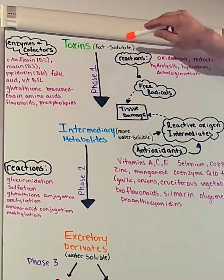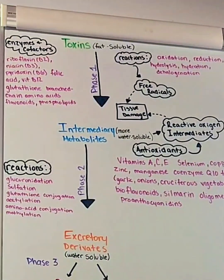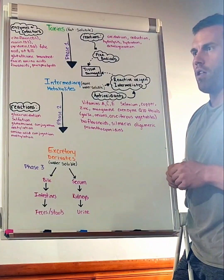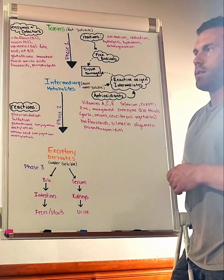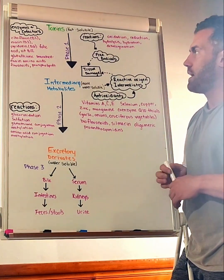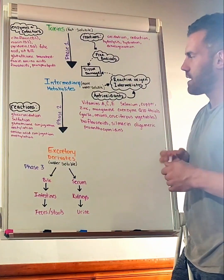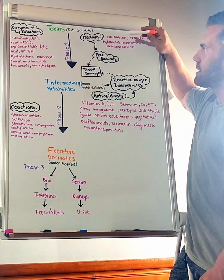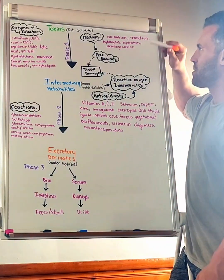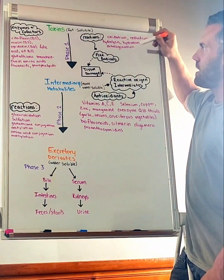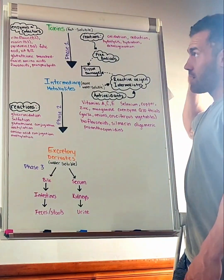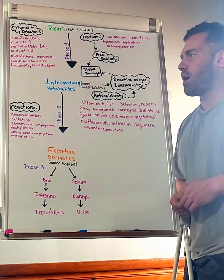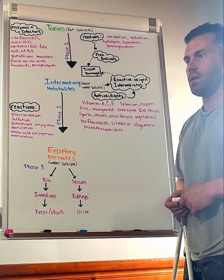First off, we have phase one. In this phase, we have essentially fat-soluble toxins. We use toxins as a word to describe all the waste products that are coming in to be sorted out through this phase. During phase one, there are several reactions that are occurring: oxidation, reduction, hydrolysis for those protein consumers, hydration, and dehalogenation.